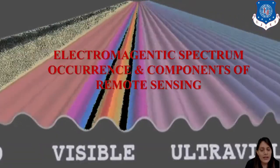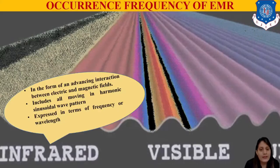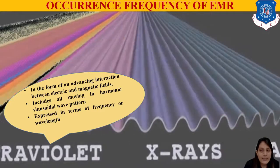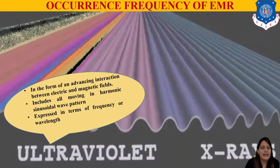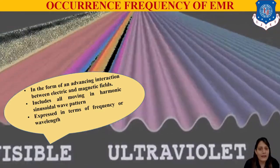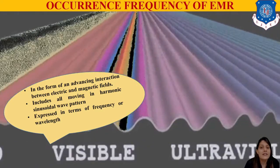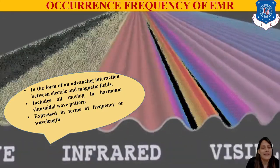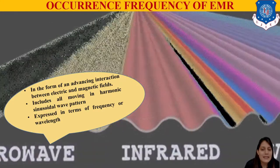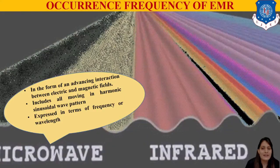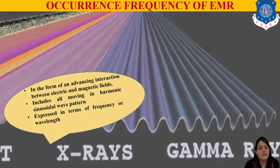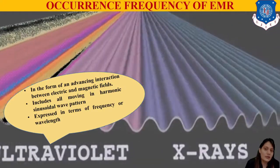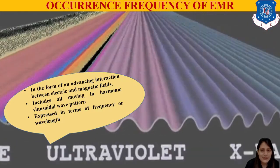This is a very important and fundamental topic. What is the occurrence of electromagnetic radiation? It occurs in the form of an advancing interaction between electric and magnetic fields. It includes all waves moving in a harmonic sinusoidal wave pattern, and it is expressed in terms of frequency or wavelength. You can see in the background the X-rays and gamma rays shown in the sinusoidal wave pattern.